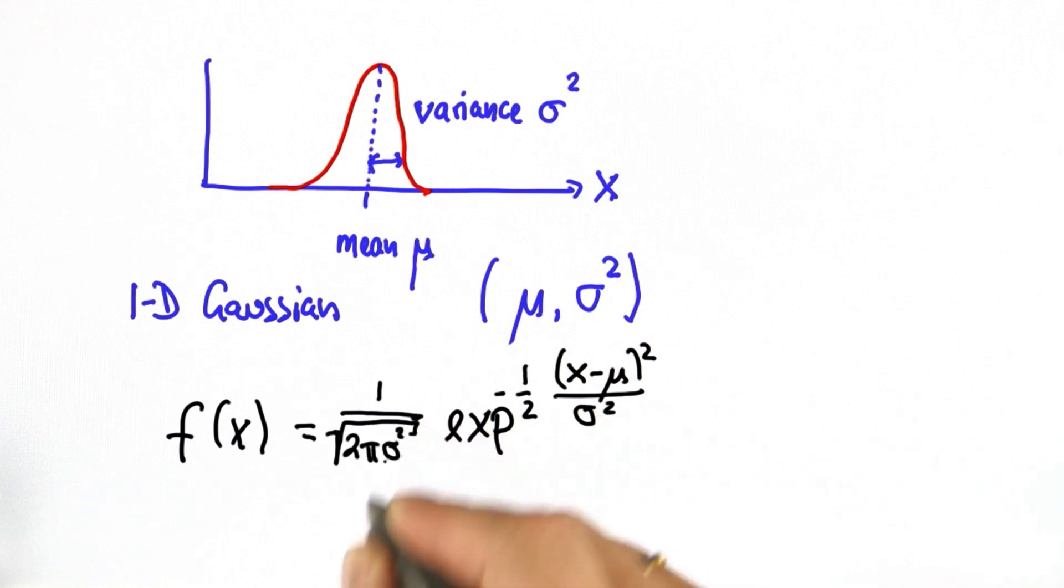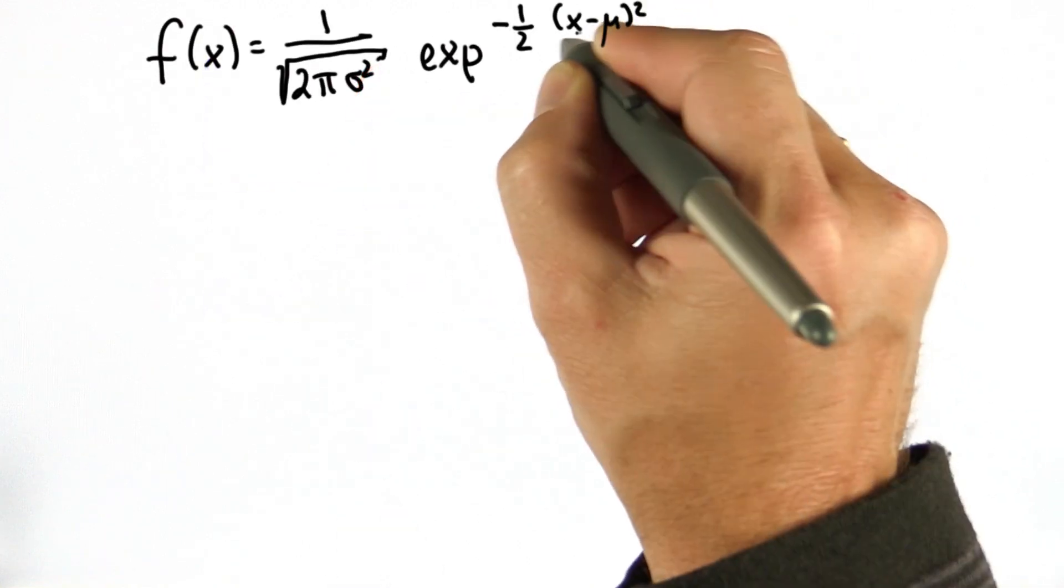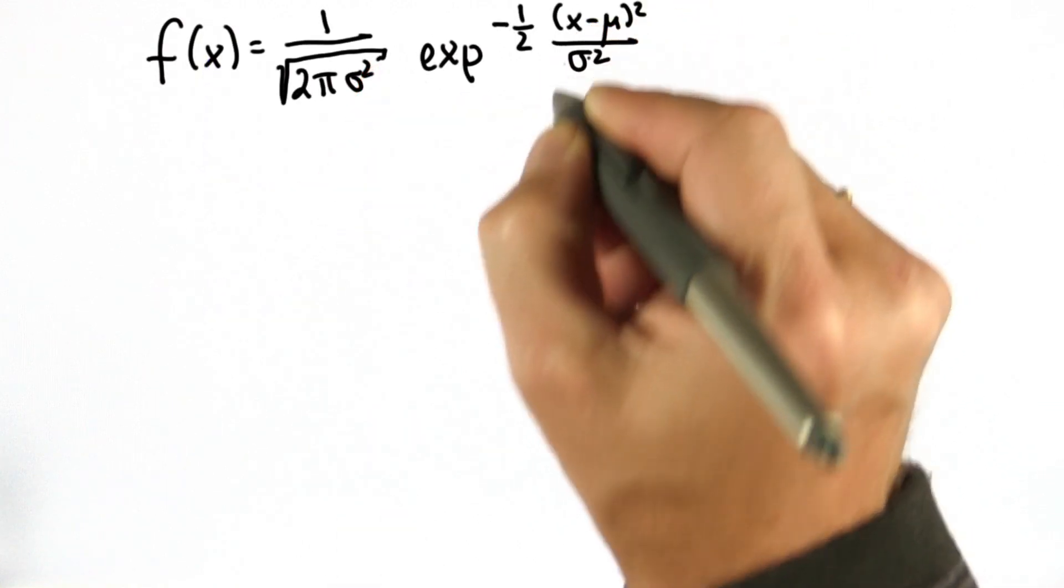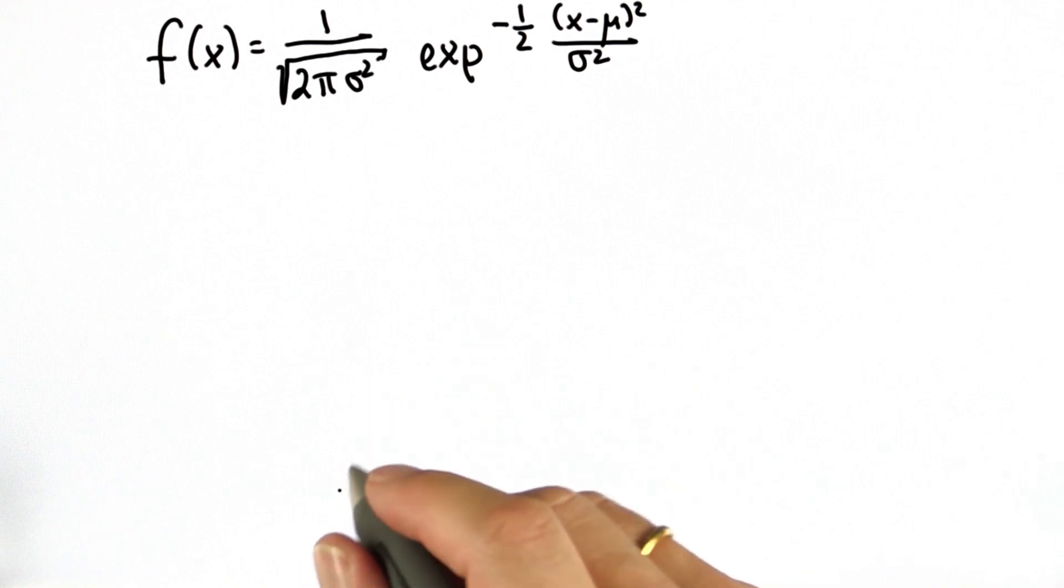It turns out we have to normalize this by a constant, 1 over the square root of 2 pi sigma squared. But for everything we talk about today, this constant won't matter, so ignore it. What matters is we have an exponential of a quadratic function over here.